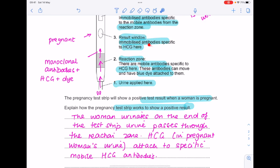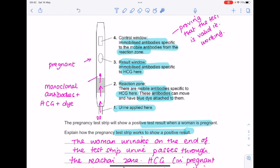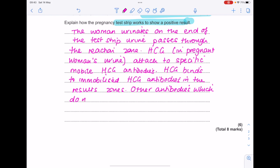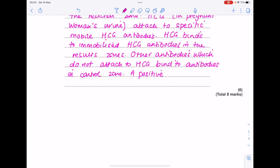And so what happens in the results window is that the HCG hormone binds to the immobilized HCG antibodies in the results zone. Remember immobilized means they don't move, they're just waiting for the HCG. Remember that there are other antibodies present which rather than being specific to HCG, they're specific to mobile antibodies from the reaction zone. So they'll effectively pair up here in the control window which will show the blue line proving that the test is valid. And finally, a positive test result is shown by a blue line in both the control and result zone.